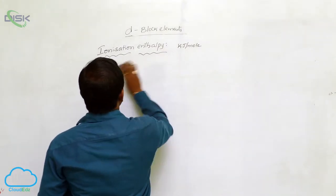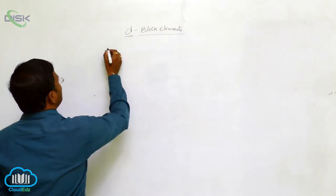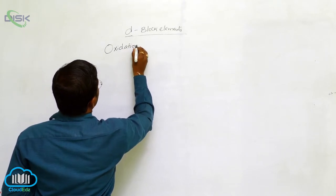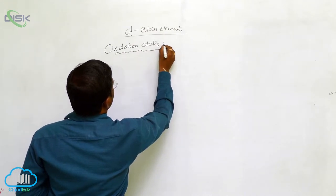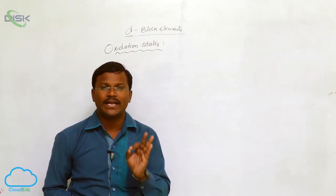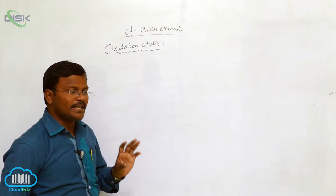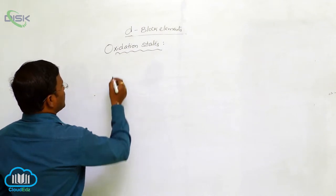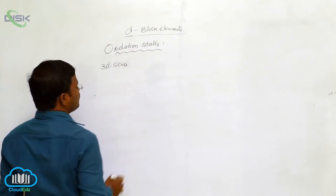The most important factor to explain the chemical behavior of any element is oxidation states, also called oxidation number. It is the most important phenomenon we have to learn about each and every element belonging to S-block, P-block, D-block, and F-block categories. Here I would like to start with the 3D series, as most of our discussion will relate to the elements belonging to the 3D series.